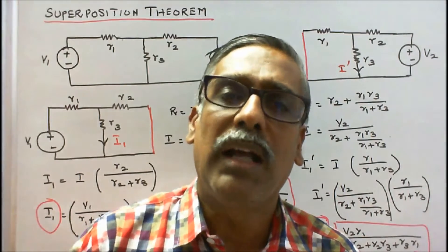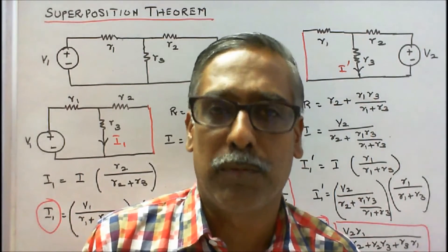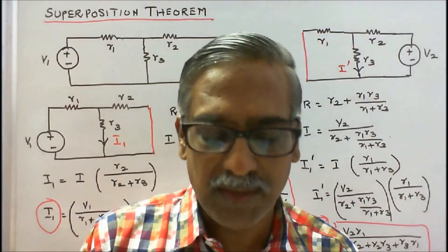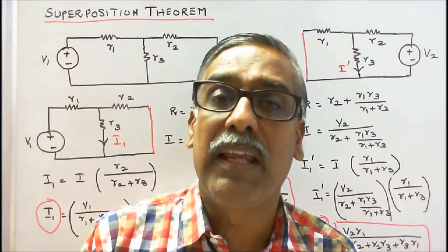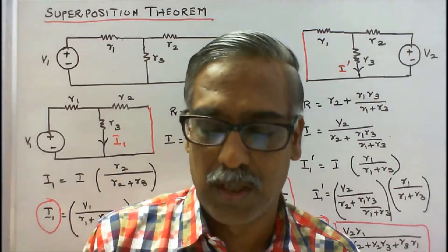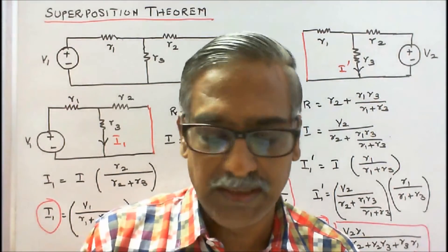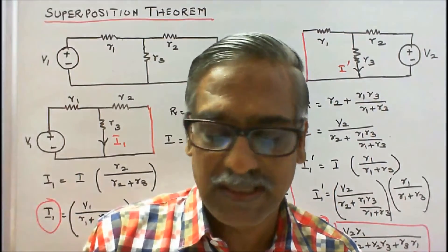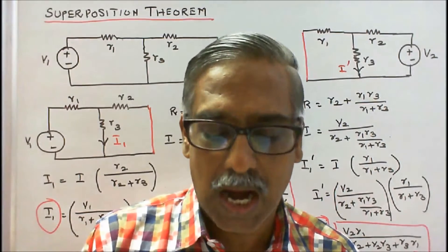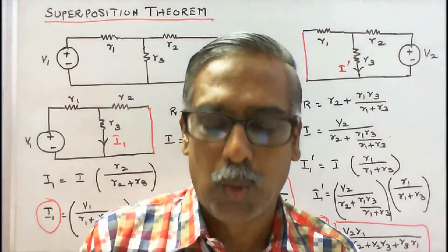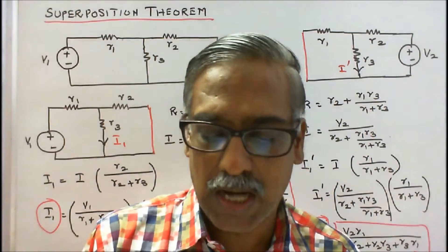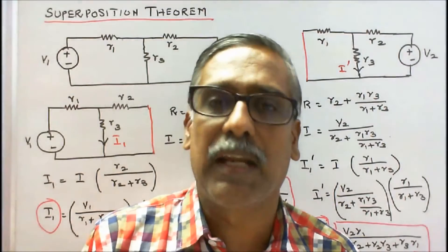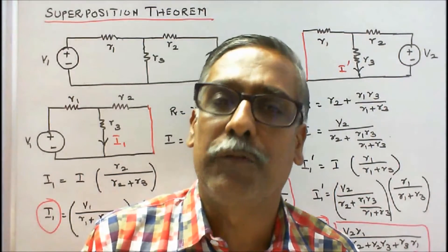What are the limitations of superposition theorem? The superposition principle is applicable only when the source and response have a linear relationship. Voltage and current have a linear relationship, provided the resistances are linear. However, voltage and power are not linearly related, hence this theorem cannot be used to find power.